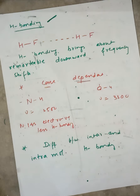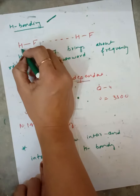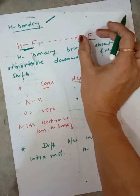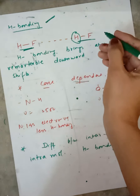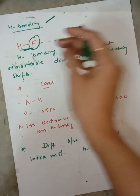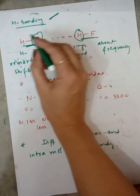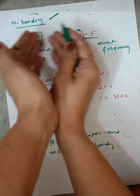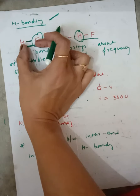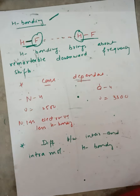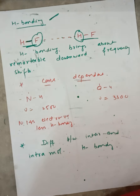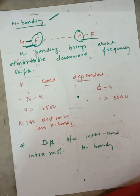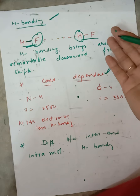The second factor affecting frequency is hydrogen bonding. For example in HF, there is hydrogen bonding between the hydrogen of one molecule and the fluorine of another molecule. Because of this hydrogen bonding, the H–F bond gets weaker, and when the bond gets weaker there is a decrease in frequency. Hydrogen bonding brings about a remarkable downward frequency shift. Hydrogen bonding is concentration dependent — the more concentrated the solution, the more the hydrogen bonding, and the more the downward shift. We can diminish the effect of hydrogen bonding by diluting the solution.